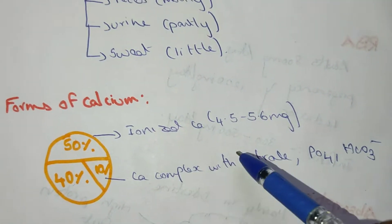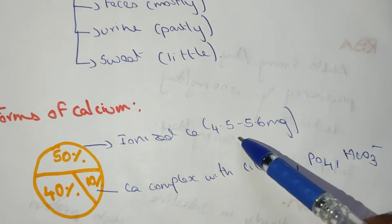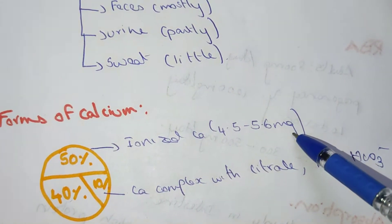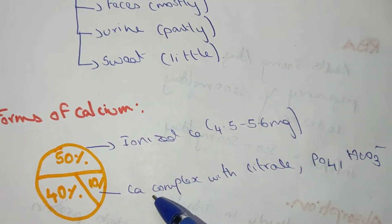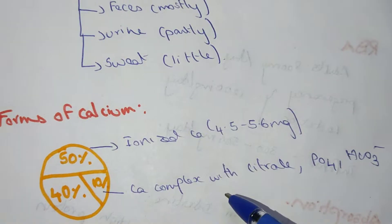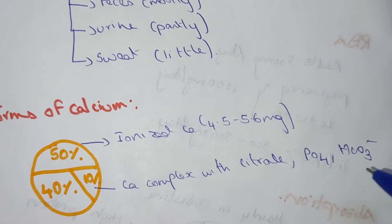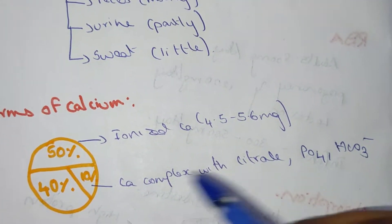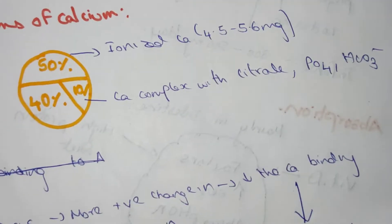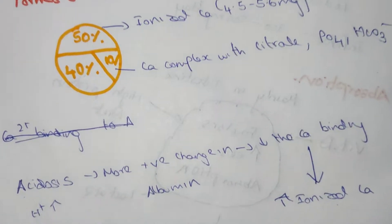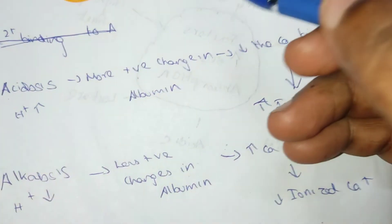The forms of calcium in plasma: 50 percent is in ionized form, with a plasma level of 4.5 to 5.6 mg/dL. Calcium complexed with citrate, phosphate, and bicarbonate accounts for 10 percent, and the non-ionized form is 40 percent.